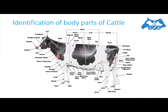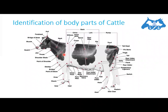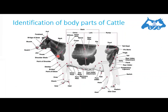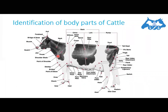Where the neck ends, the shoulder blade starts. This is the whole shoulder area. Below the point of the shoulder, there is skin hanging down, known as the dewlap. Above the dewlap there is the brisket. Just at the rear end of the brisket there is the elbow joint, where the leg begins.